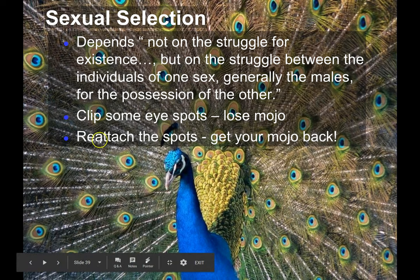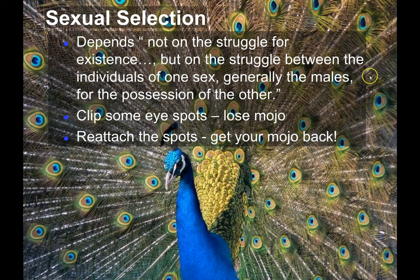But at some point, bigger, brighter plumage became an arms race that spiraled out of control, such that now you have peacocks with these enormous sets of plumage. What's to stop them from getting even bigger? Well, at some point the size of the plumage becomes a detriment for ecological selection — the feathers become a liability for survival that outweighs their benefits in attracting mates.